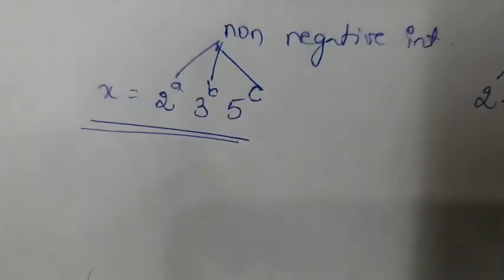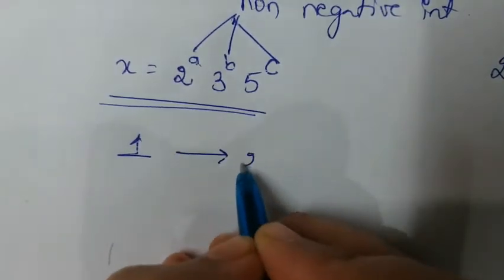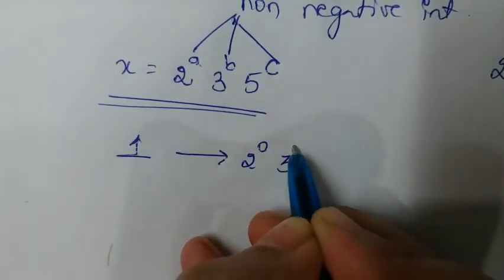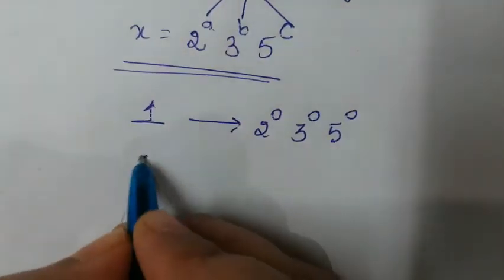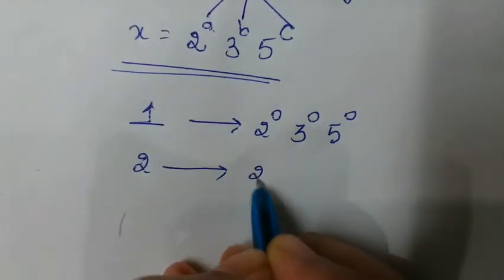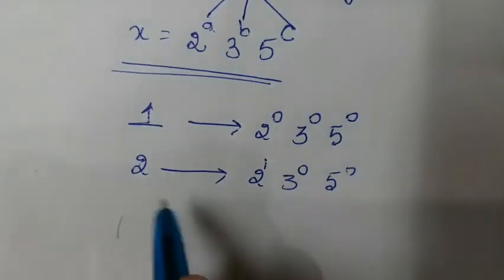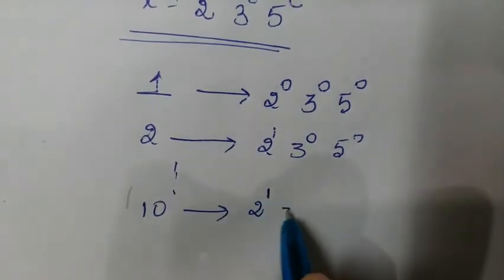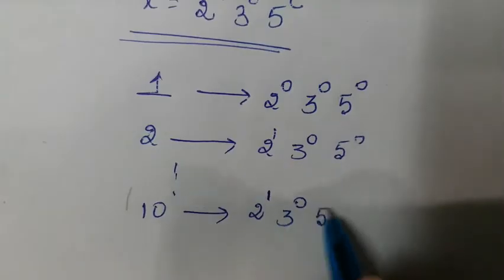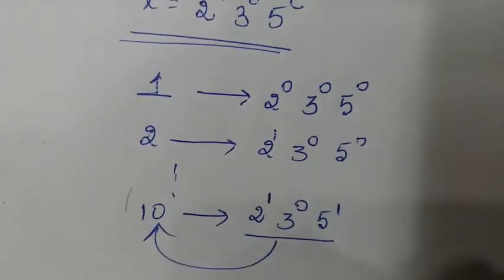Here, a, b, c are non-negative integers. So 1 can be represented as 2^0 × 3^0 × 5^0, and 2 can be represented as 2^1 × 3^0 × 5^0, and so on. 10 can be represented as 2^1 × 3^0 × 5^1, which equals 10.